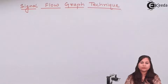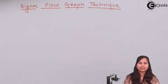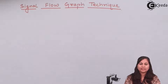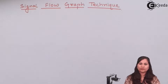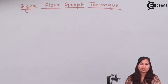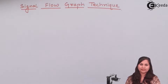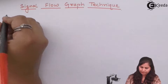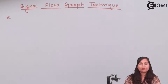In our earlier videos we have studied the block diagram technique for representing the control systems. In the block diagram technique it involves a number of blocks and feedback blocks are also involved in it. So the representation of a control system using the block diagram technique is very complex and very confusing. So there is another technique called the signal flow graph technique which is used to represent the control systems.